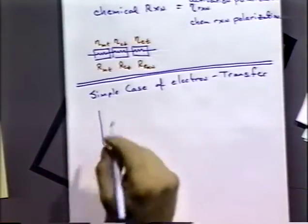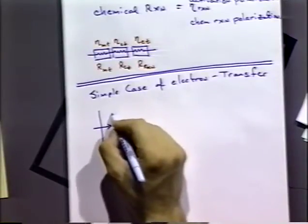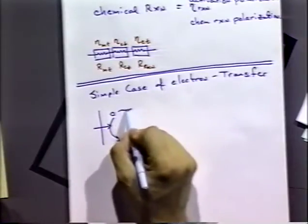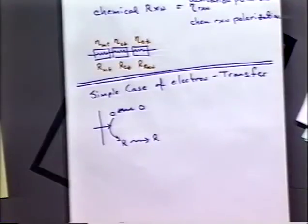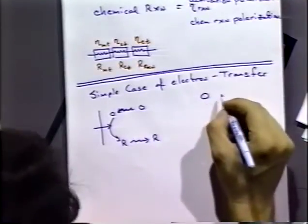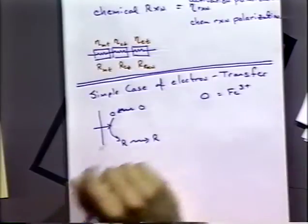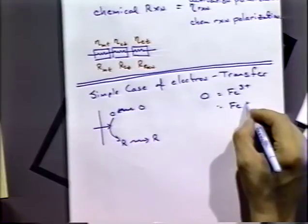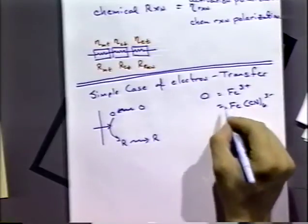Let's think of a reaction that's only limited by mass transport. In other words, we have a molecule that is approaching the electrode from the bulk. Let's say molecule O, which is an oxidized molecule — O might be something like iron 3+, that's an oxidized species. O might equal ferricyanide, a very traditional redox couple.